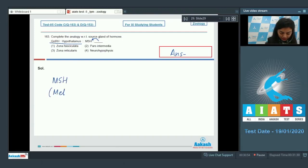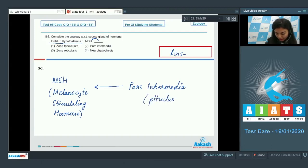MSH, that is melanocyte stimulating hormone, is a peptide hormone which stimulates the synthesis of melanin pigment and is secreted by pars intermedia of pituitary gland. So the right answer here would be option number two, that is pars intermedia, whereas zona fasciculata and zona reticularis are layers of adrenal cortex and neurohypophysis is posterior pituitary.